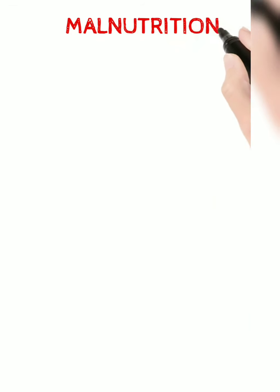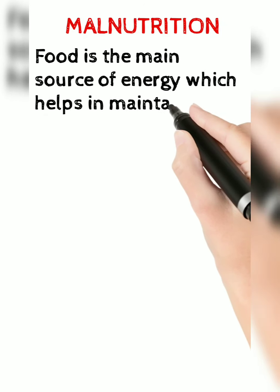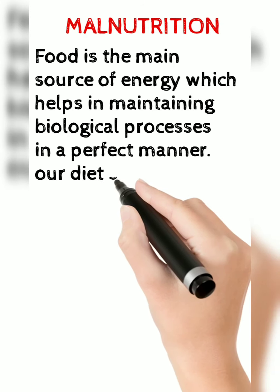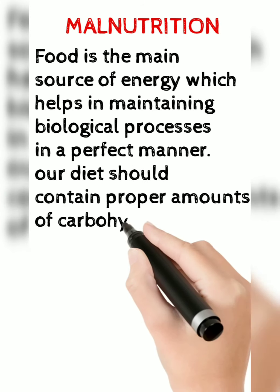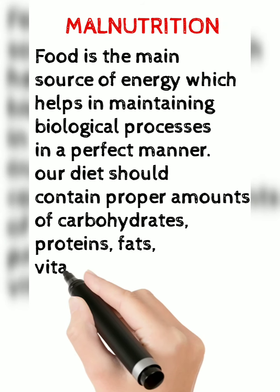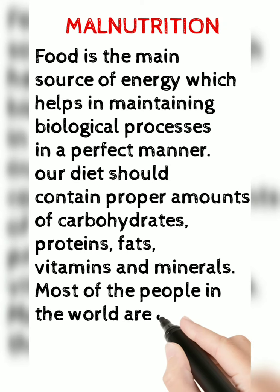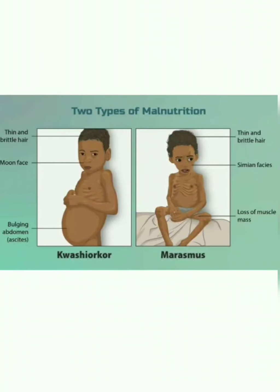Now let us learn about malnutrition. Food is the main source of energy which helps in maintaining biological processes. Our diet should contain proper amounts of carbohydrates, proteins, fats, vitamins, and minerals. Most people in the world are affected by food-related diseases. Eating food that does not have one or more nutrients in the required amount is known as malnutrition.